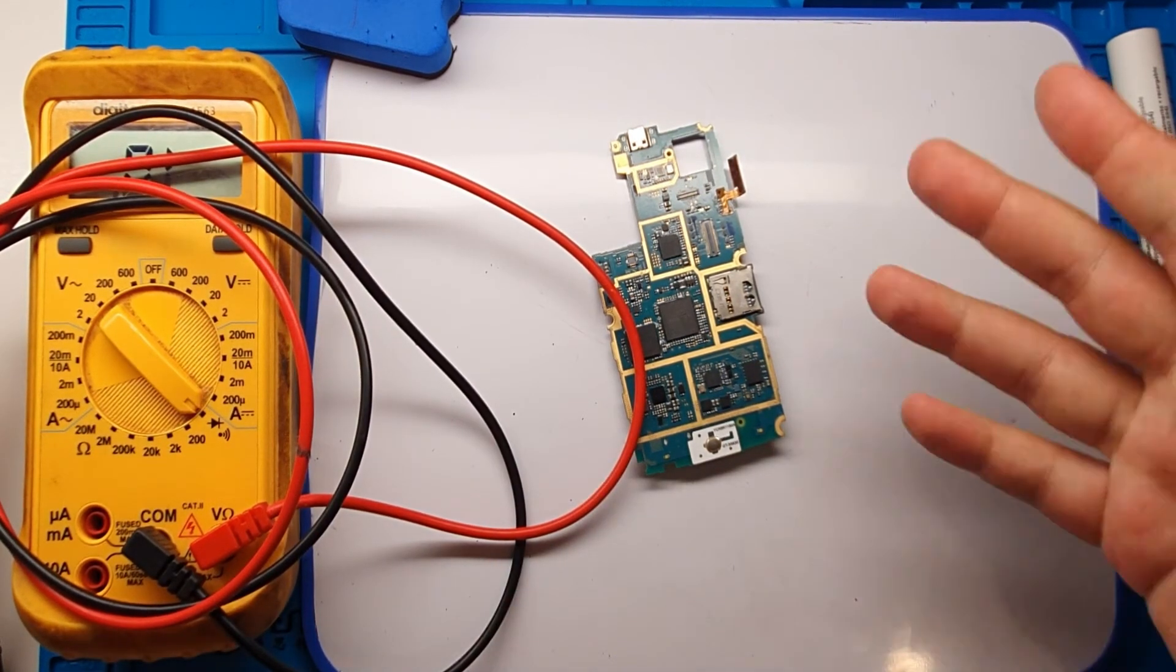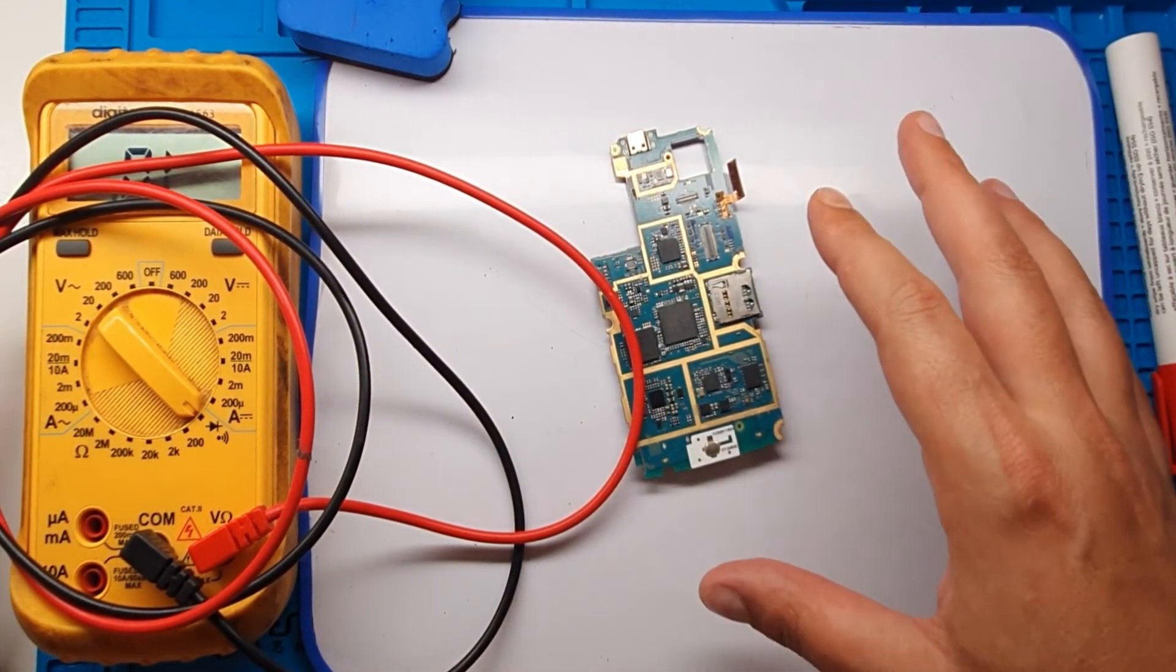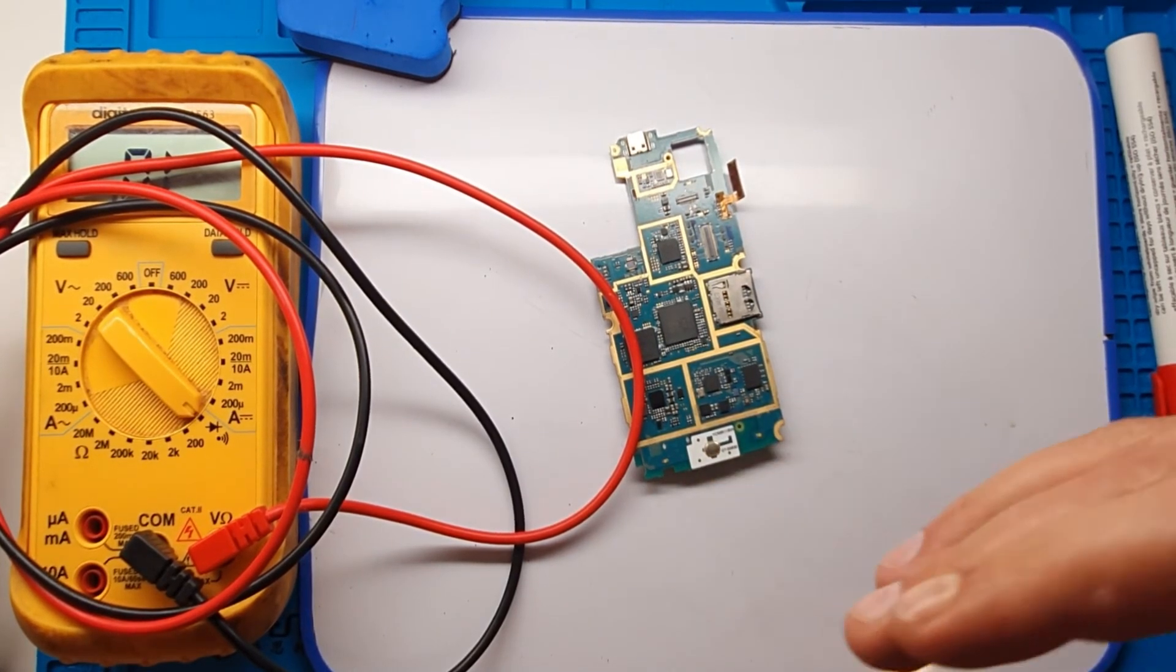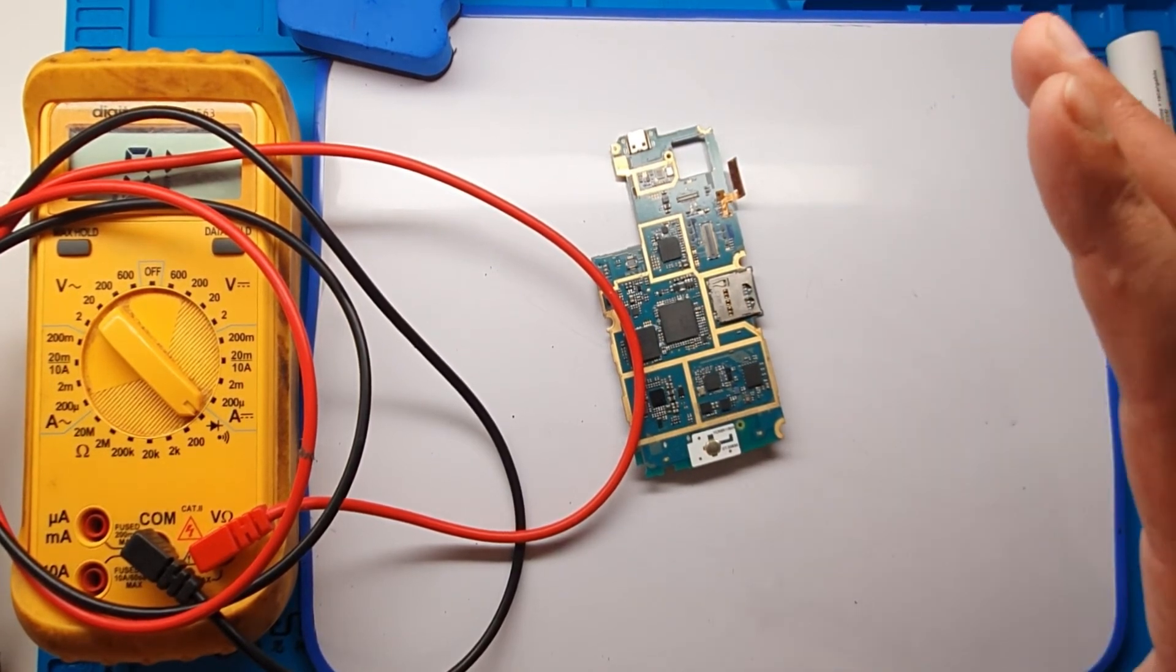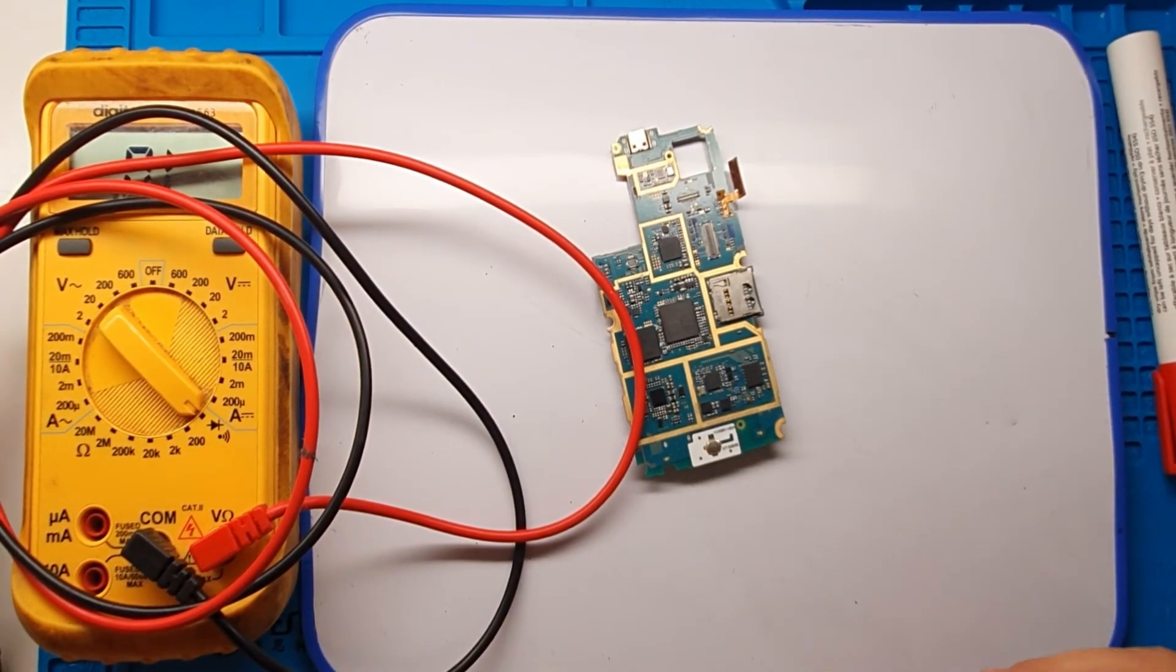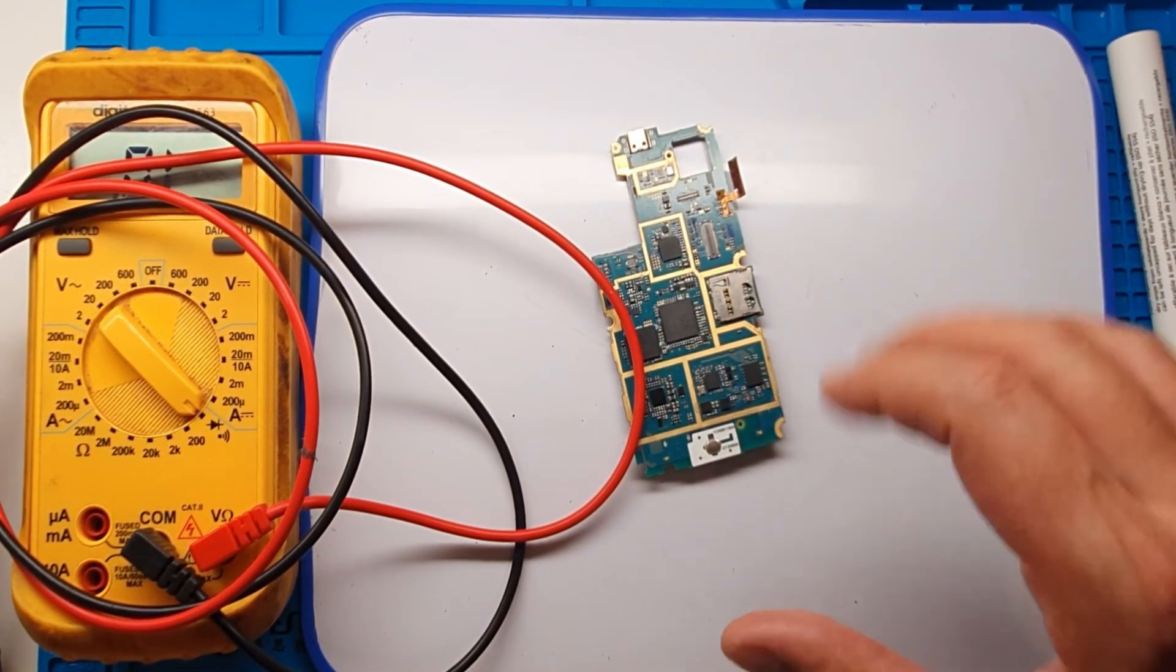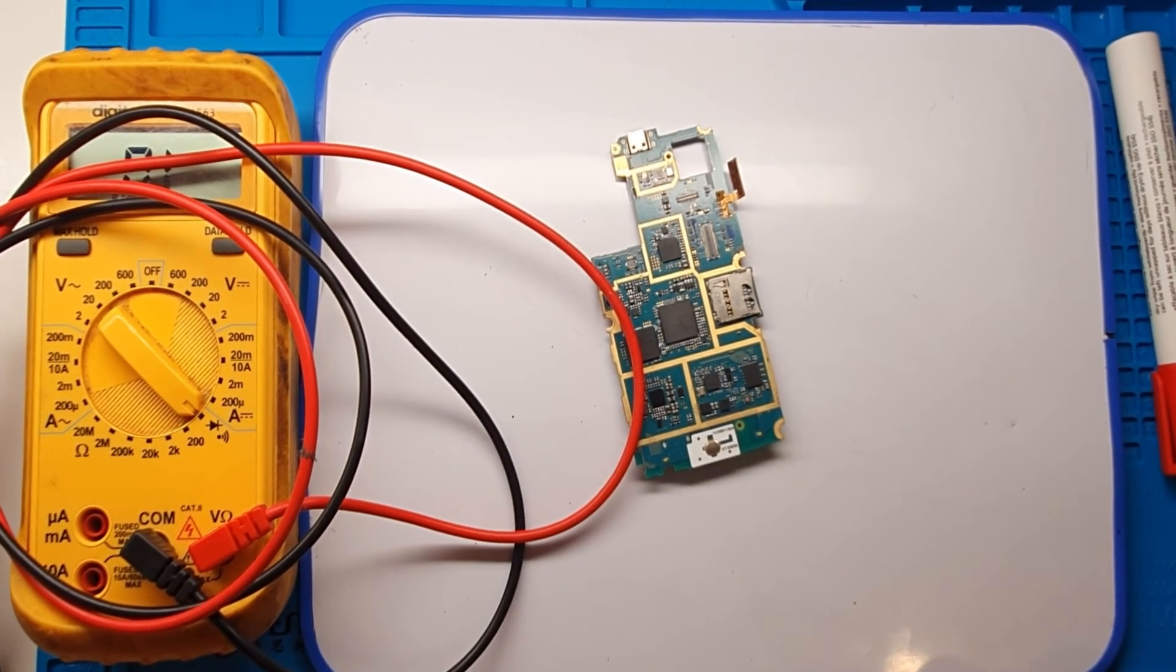And I think this video helped you to understand what does it do, this component, and how to check this component. If you want to get more information, as I said before, the Wikipedia website has good information about this component. You can go to the Wikipedia website and in the search box write diode and you'll get more information. Thank you for watching, awaiting your suggestions and see you next video.